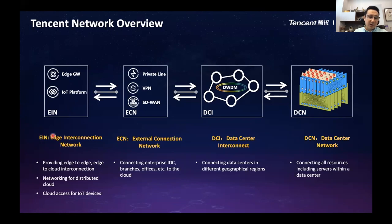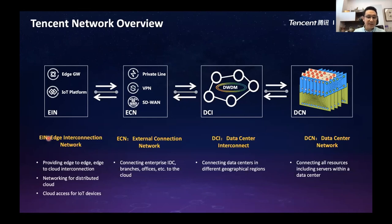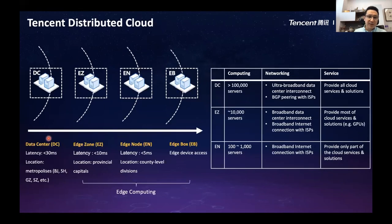Today I would like to talk about EIN — the edge interconnection network. We initiated this network solution two years ago. We provide edge-to-edge and edge-to-cloud interaction and networking for the distributed cloud. We also provide 5G cloud support — 5G core or 5G UPF — which can also be supported using the EIN.